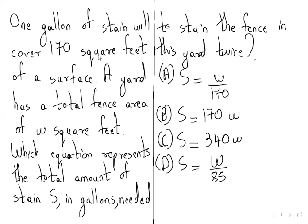One gallon of stain will cover 170 square feet of a surface. A yard has a total fence area of W square feet, which equation represents the total amount of stain S in gallons needed to stain the fence in this yard twice.